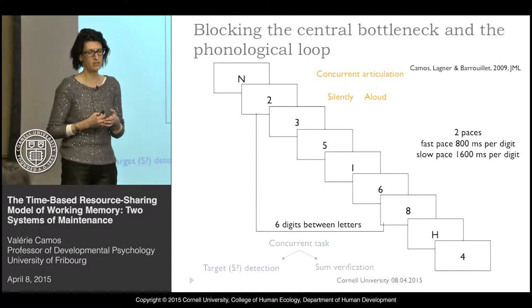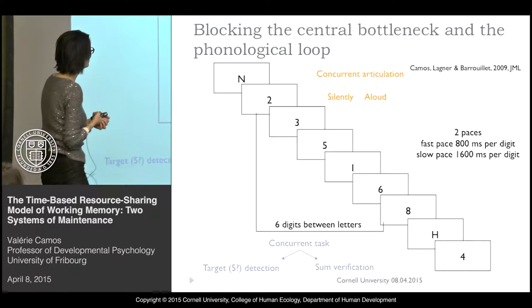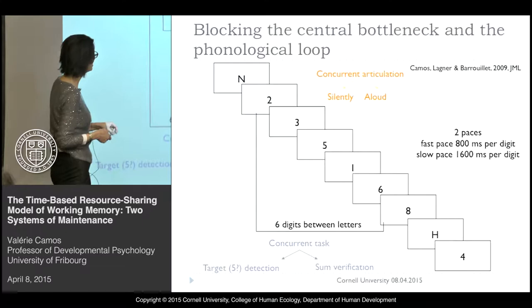Among the different studies we did, what we tried to do is understand how the two systems coexist and how they interact. One of the first experiments we did used a complex span task in which participants maintain a series of letters, and between those letters they have seen some digits — six digits.